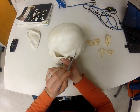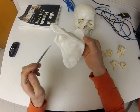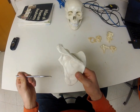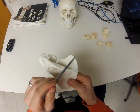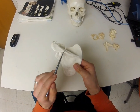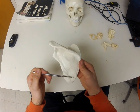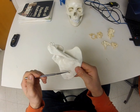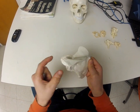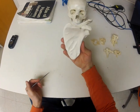Moving on to the scapula - looking at the posterior side, this is the lateral border and this is the medial border. Following the medial border to the top gives you the superior angle; following the lateral border to the bottom gives the inferior angle. The spine of the scapula runs along the back and divides two fossae: below the spine is the infraspinous fossa, and above the spine is the supraspinous fossa.